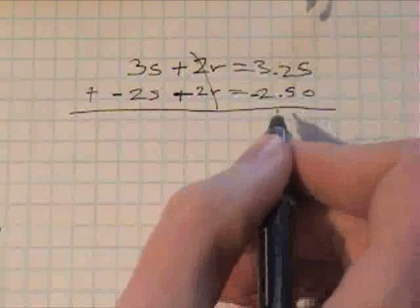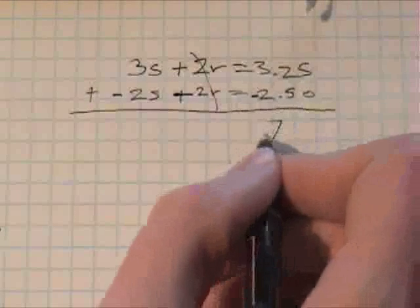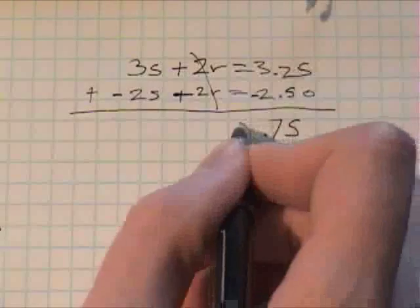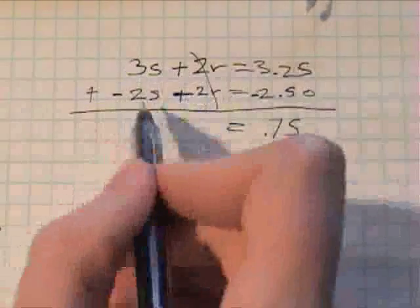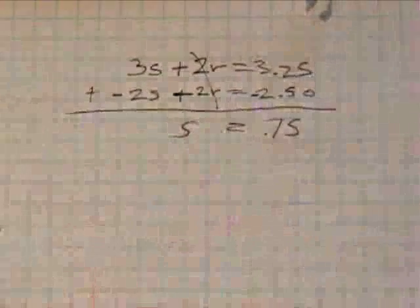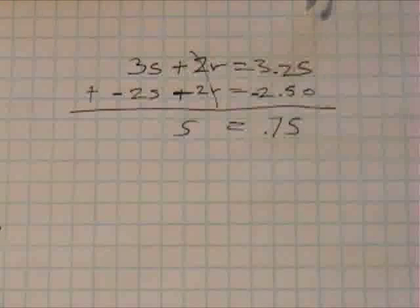This here becomes 75 cents, and this right here just becomes s. So we know that the unit s is being sold for 75 cents.